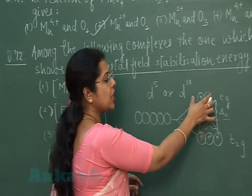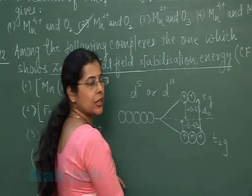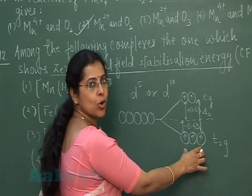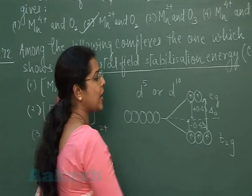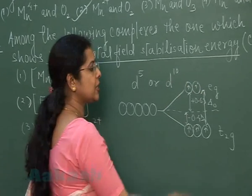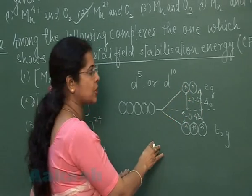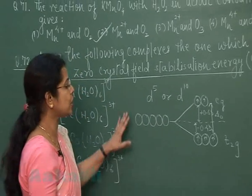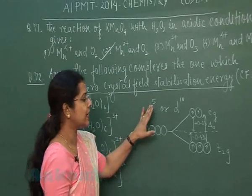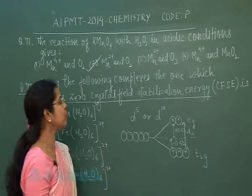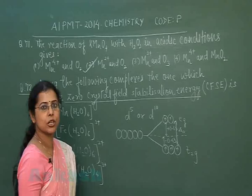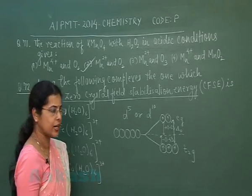You can see the total energy for t2g electrons will be 3 × 0.4, and for eg orbital it is 2 × 0.6. So we can see if configuration of complex is d5, similarly if it is d10, then we will observe zero crystal field stabilization energy.